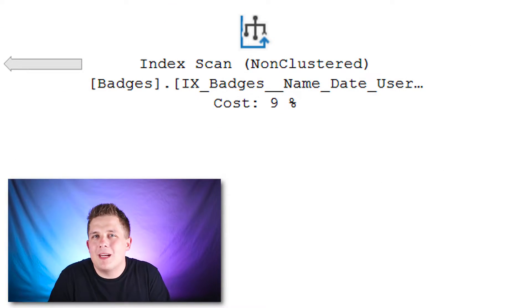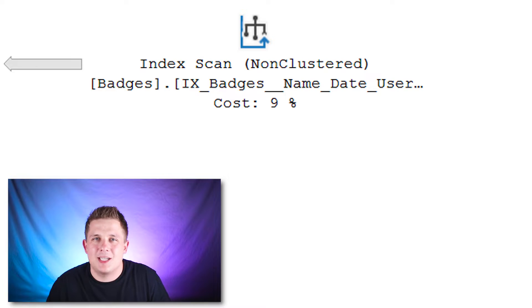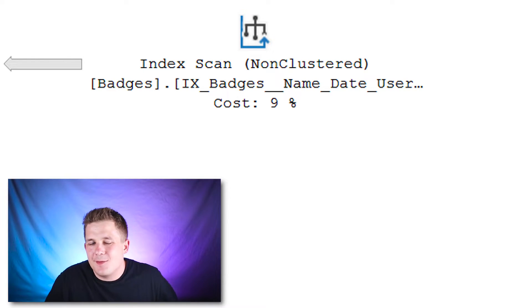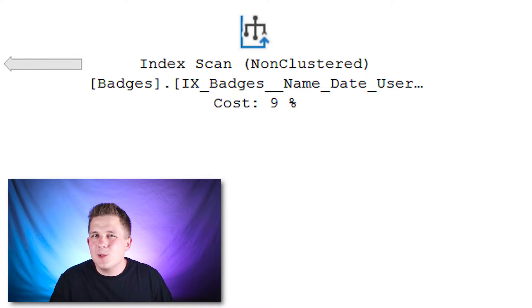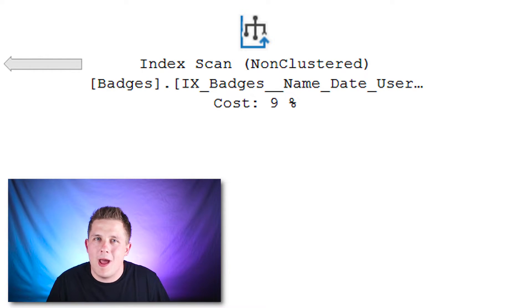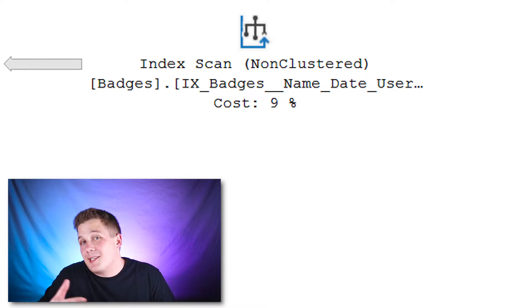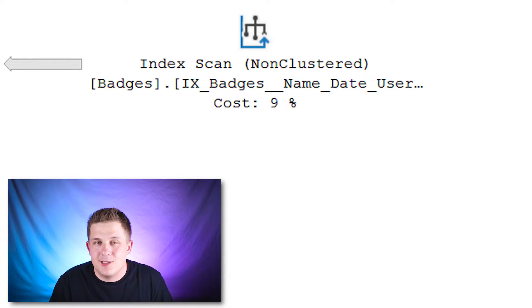Let's examine what this query is doing by looking at its execution plan. I want to start by looking at the index scan on the badges table, which is reading in all the data from the badges table. This makes sense because we're not filtering that data — there's no WHERE clause or anything like that — so there's no real way around having to read in all that data at some point in the plan.